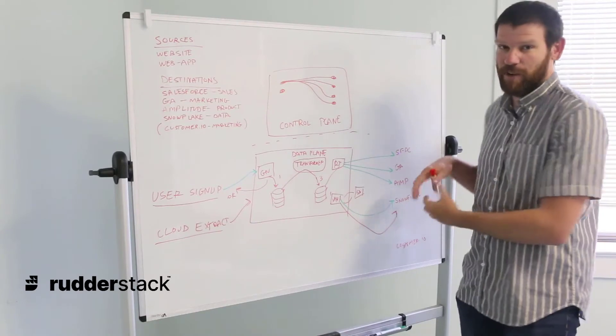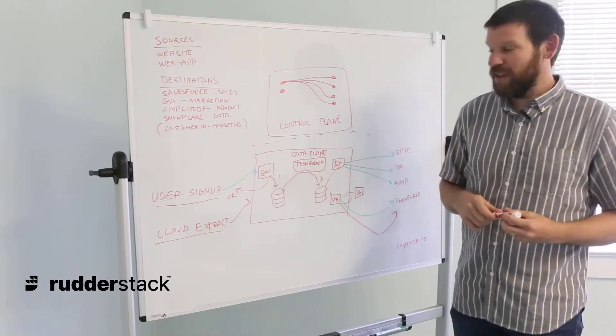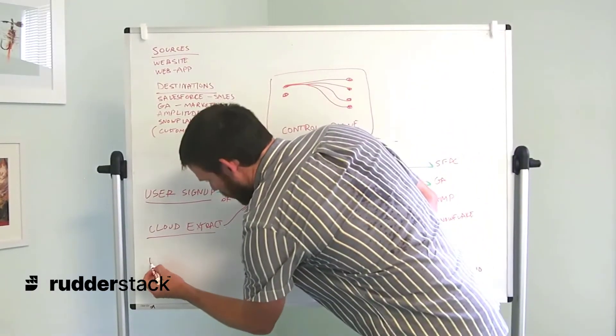Now that we have this enriched data in our warehouse, we have to figure out how to get this data back through to other downstream tools. That's where Warehouse Actions come in.